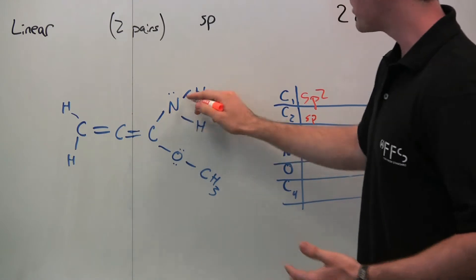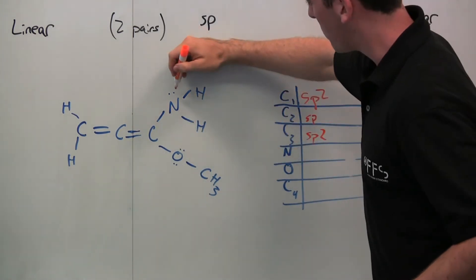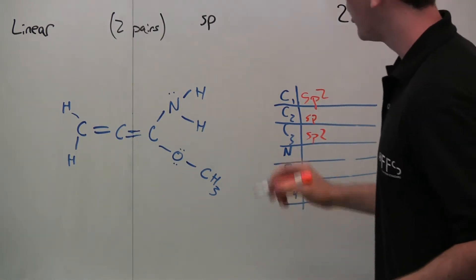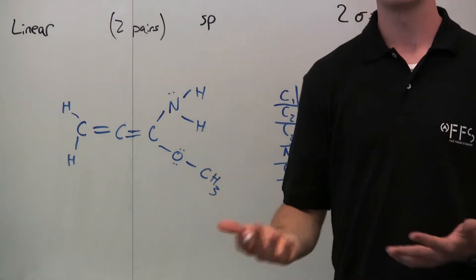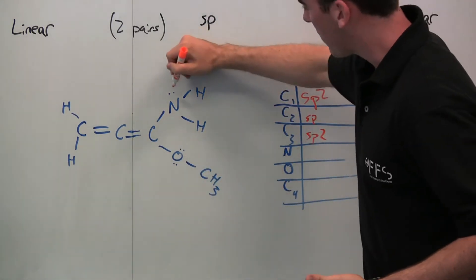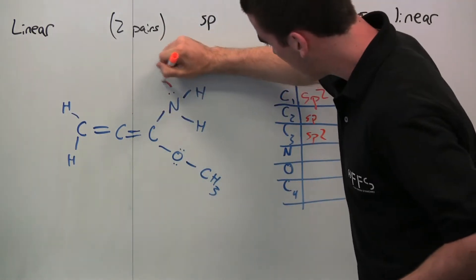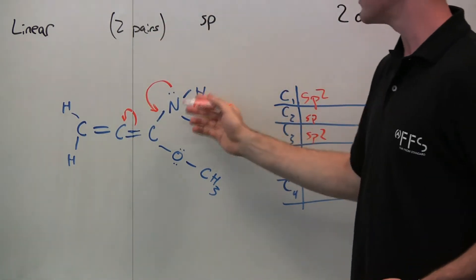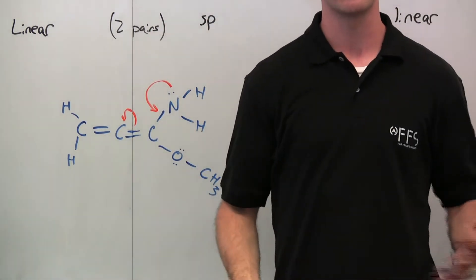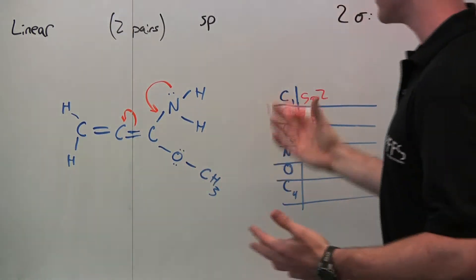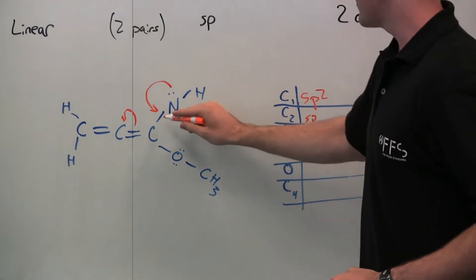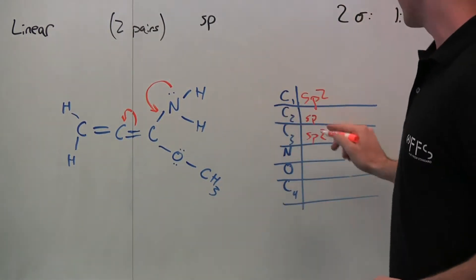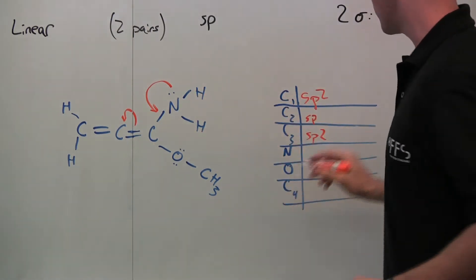Now we get to the nitrogen. Nitrogen has three sigma bonds but also has a lone pair. We need to determine whether these are delocalized or localized non-binding electrons. As you may recall from the resonance video, there's a common theme where these electrons can be moved down to make a double bond and the pi electrons can move up to the carbon. So these non-binding electrons are delocalized and don't factor into a VSEPR pair. With only three sigma bonds taken into account, this nitrogen is also SP2.